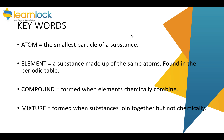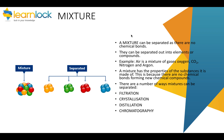Let's familiarise ourselves with the keywords. An atom is the smallest particle of a substance. An element is made up of the same atoms and is found in the periodic table. A compound is when elements join together. A mixture is when substances join together but not chemically, which means they can be separated because there are no chemical bonds.